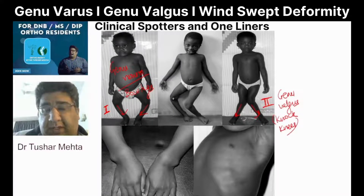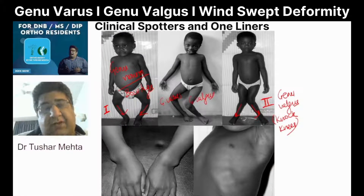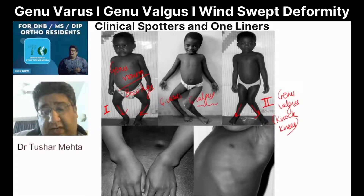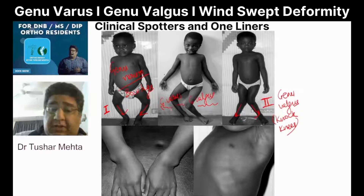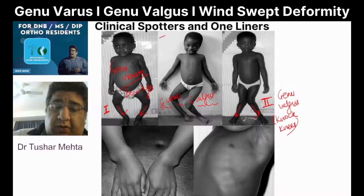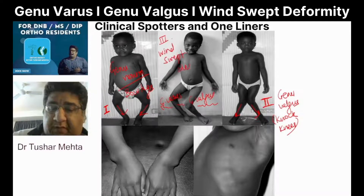If you see, this is genu varus on one side and genu valgus on the other side. It feels as if a wind came and the knees got swept with it. So this third image that you are looking at right now is what is called wind swept deformity.